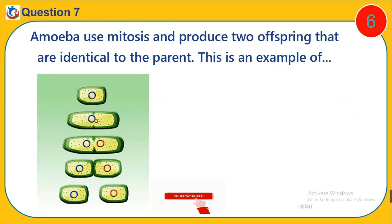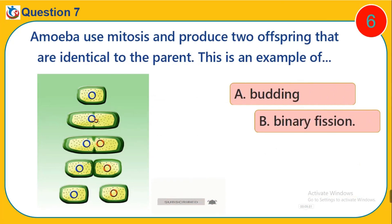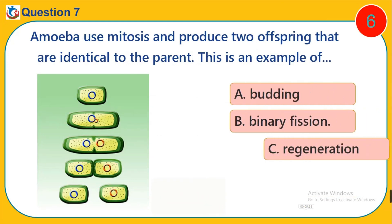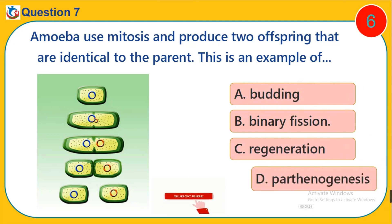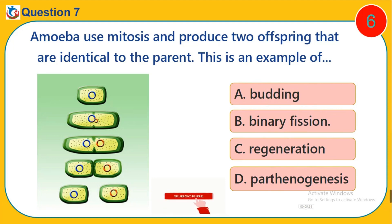Question 7. Amoeba uses mitosis and produces two offspring that are identical to the parent. This is an example of: A. Budding. B. Binary Fission. C. Regeneration. D. Parthenogenesis.